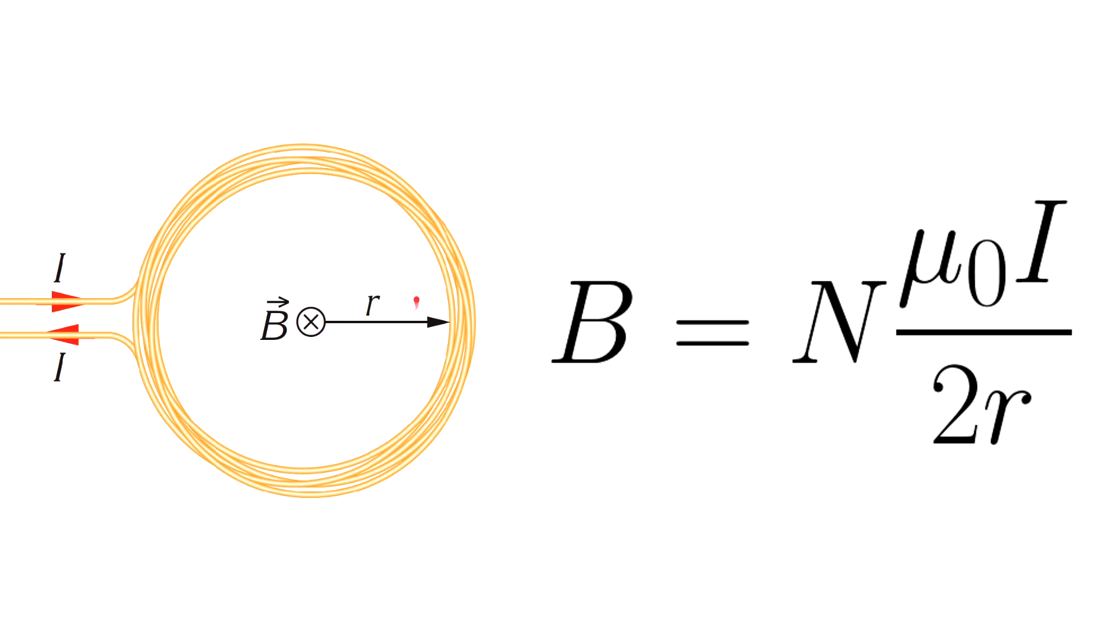Often the loops consist of N turns of wire that are wound sufficiently close together that they form a flat coil with a single radius as shown in the picture. The magnetic field at the center of the loop is N times greater than the magnetic field of an individual turn.